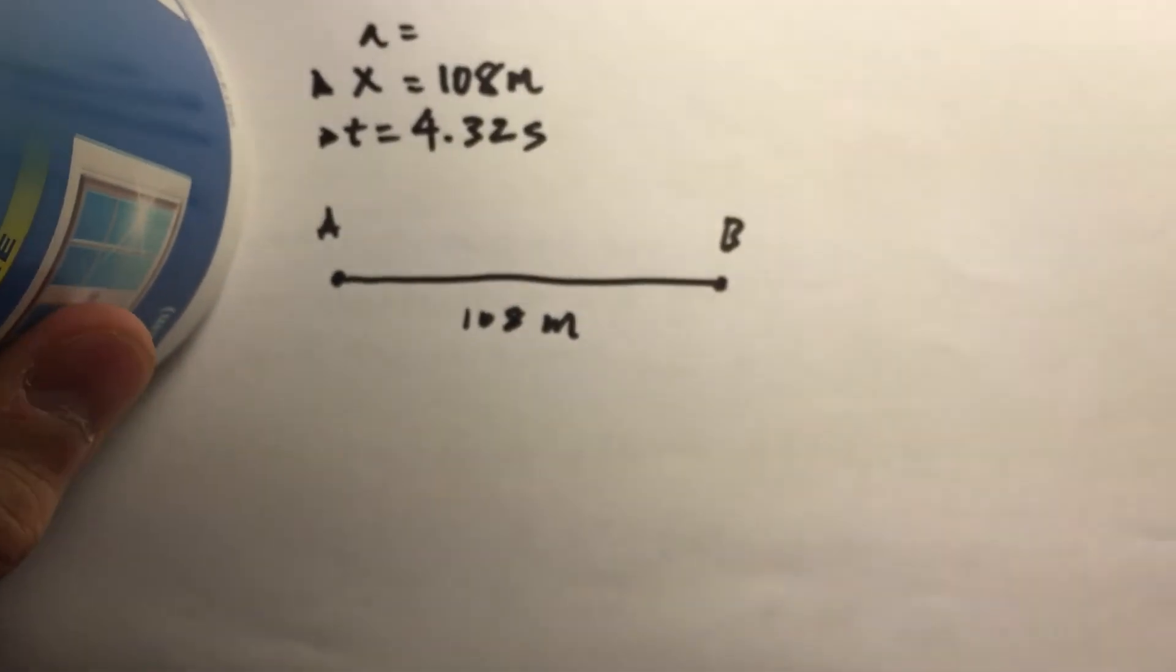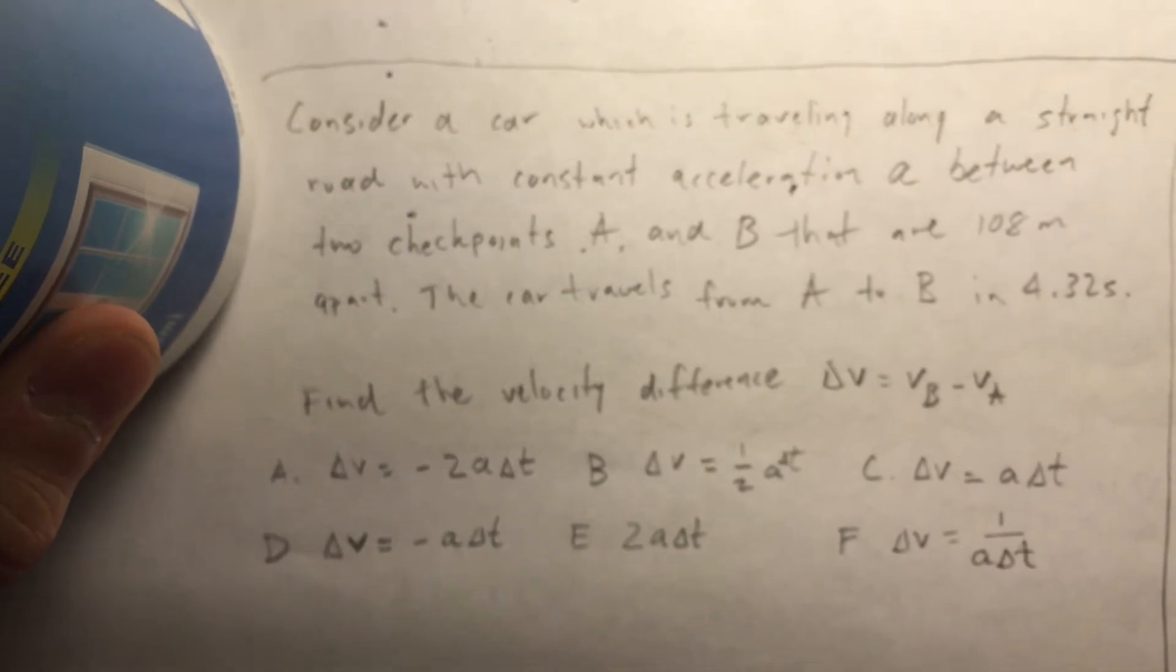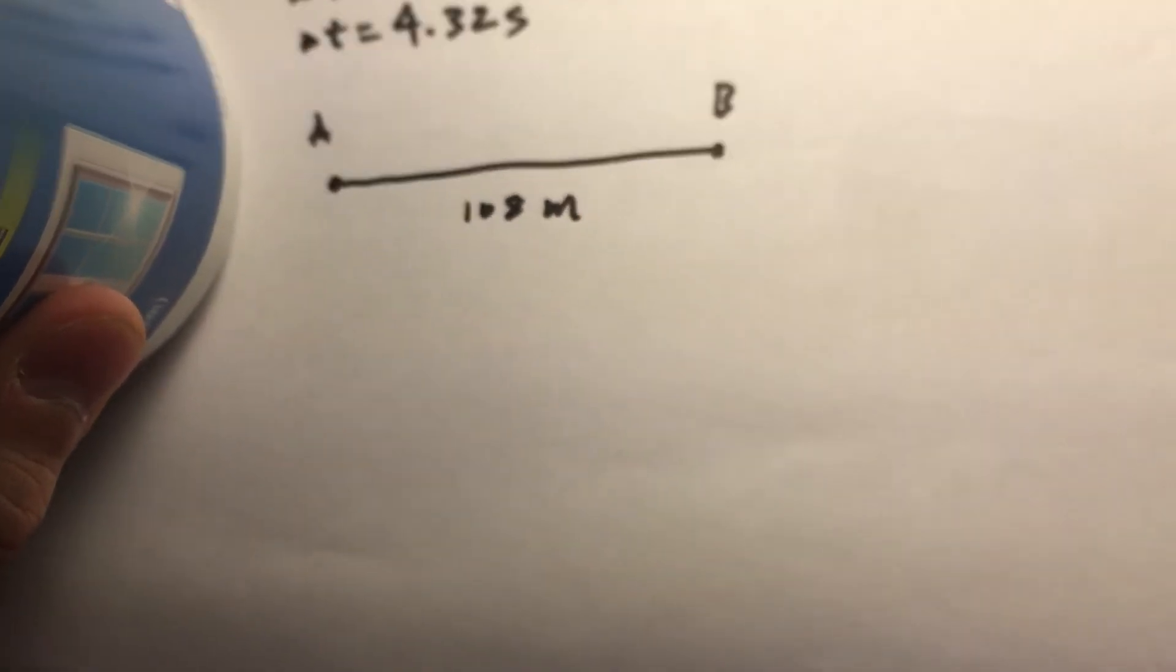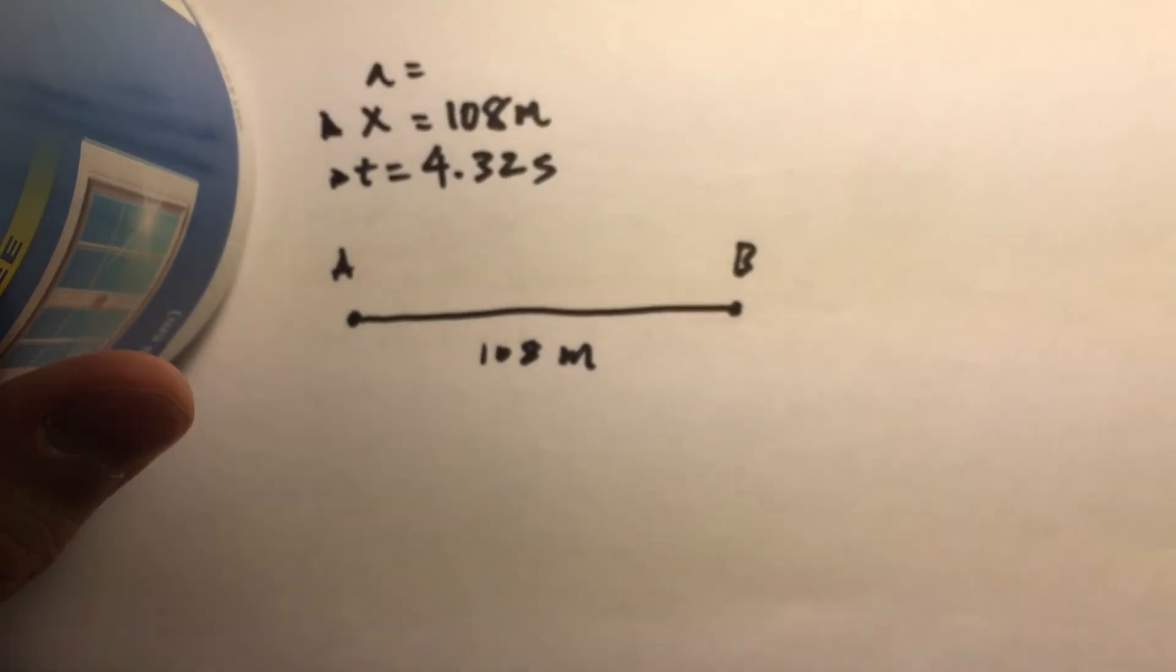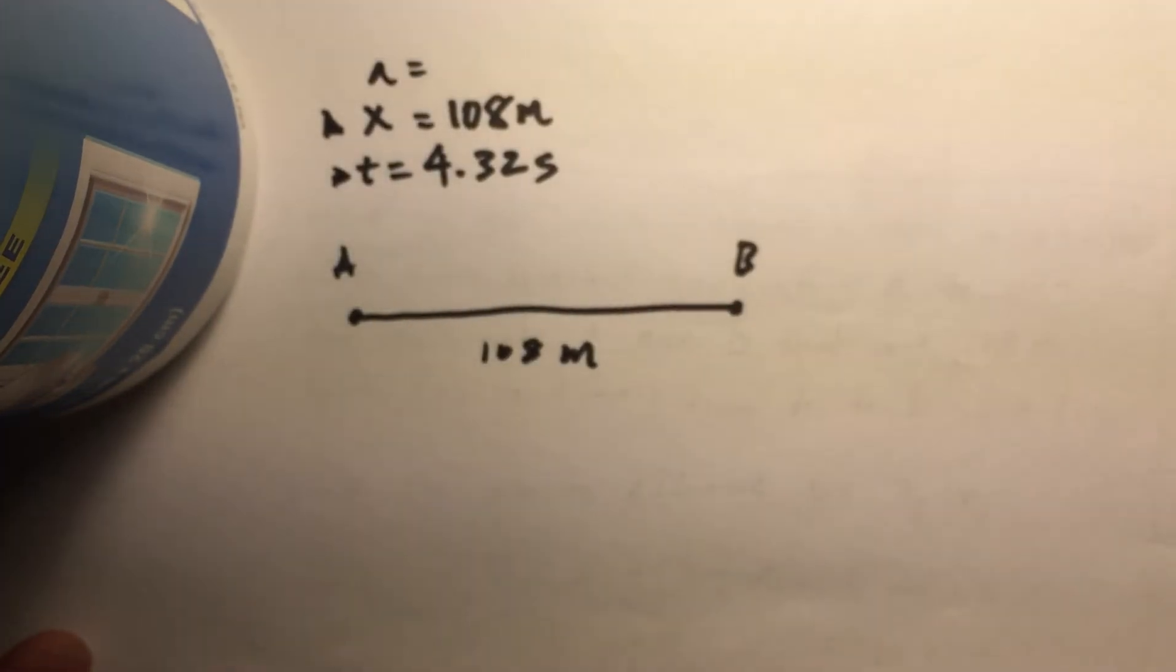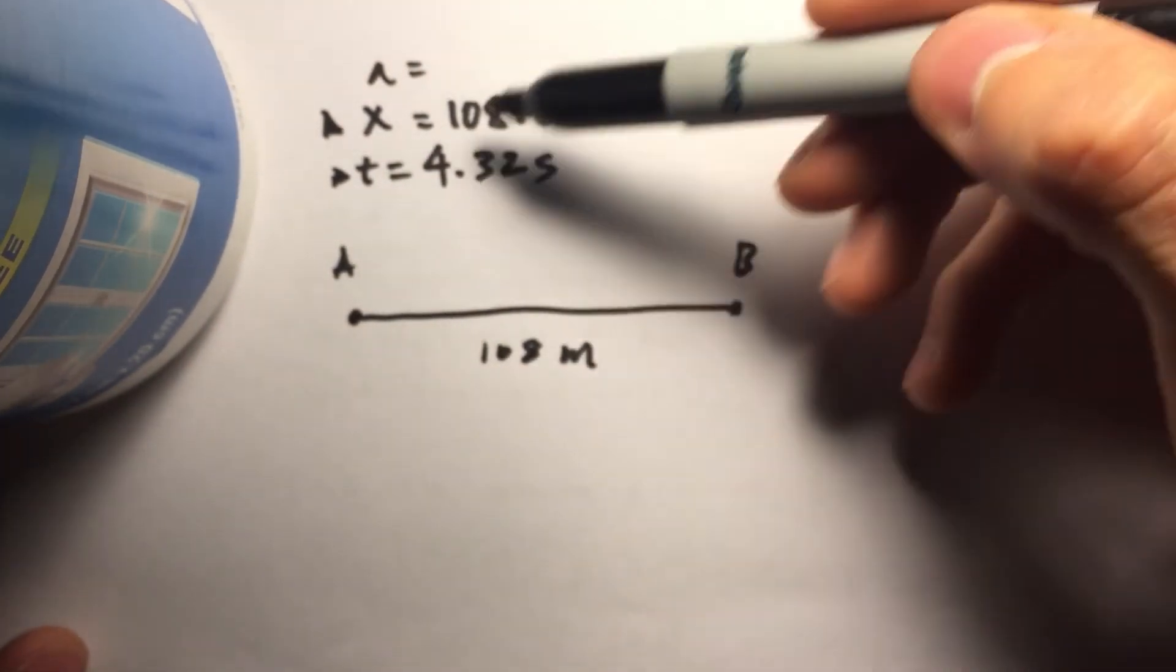Now, if you notice our answer choices, we don't have any values, we only have expressions. So we know that we're going to be using an equation to solve for our answer, but our answer doesn't have to be in units. So in order to confuse us or make us do extra work, they decided to give us values.